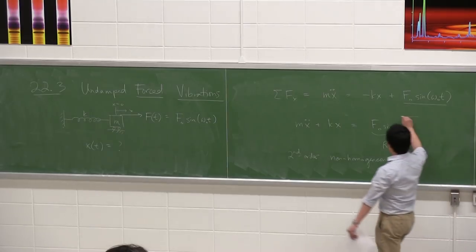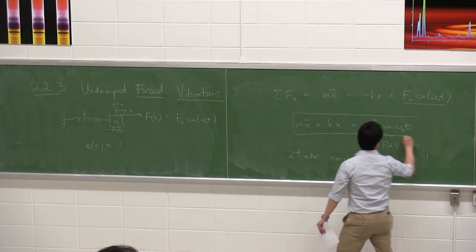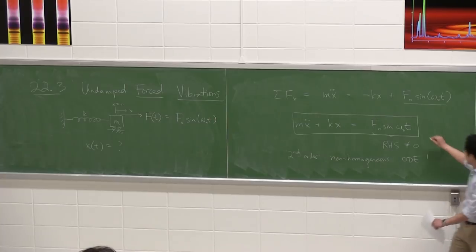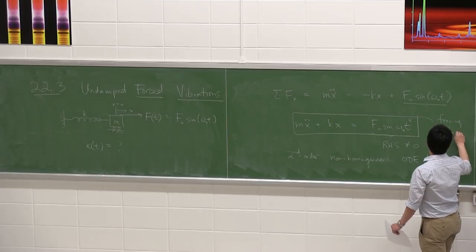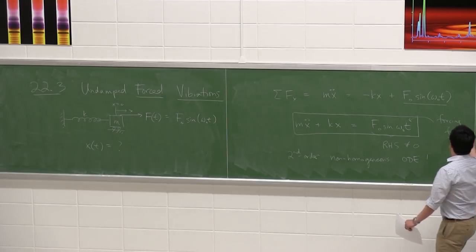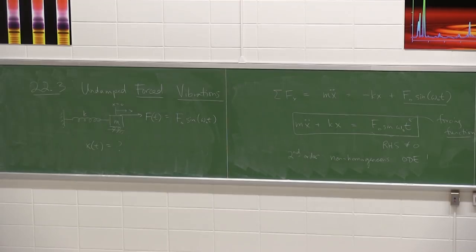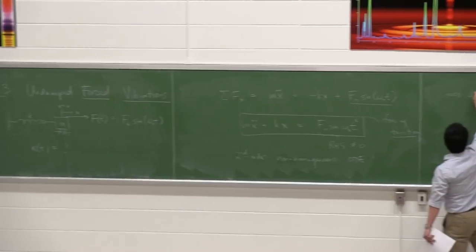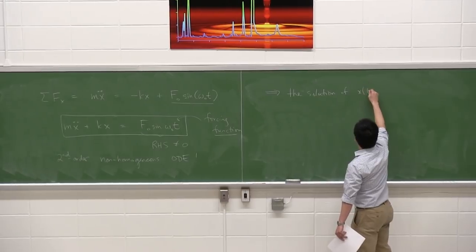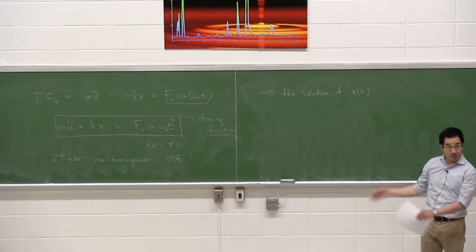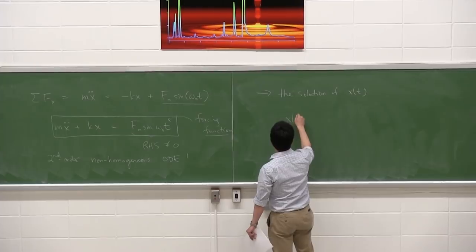With this particular type of problem, there's a specific term for this right-hand side — we call it a forcing function. The forcing function could take all sorts of forms: exponential, polynomial. In this case we're making it simple by choosing a sinusoid. I'll give you the solution x(t) for this particular differential equation right away.